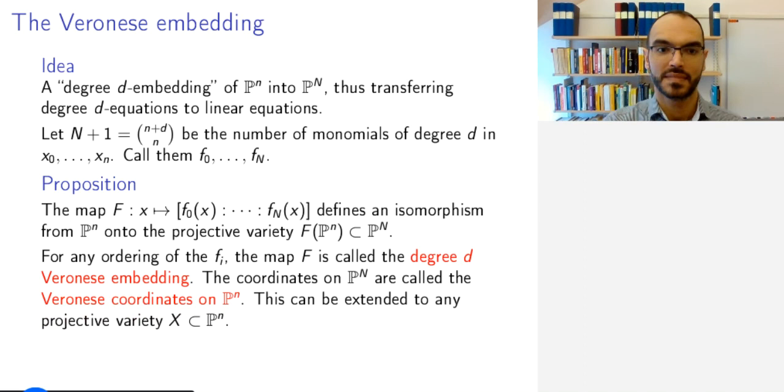And this Veronese embedding can be extended to any projective variety. We can do this for P^n, therefore we can do this for any closed sub-variety, closed subset of P^n.